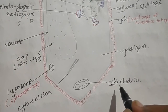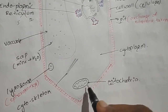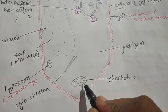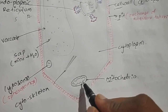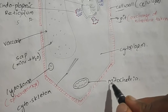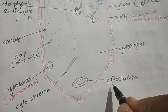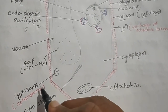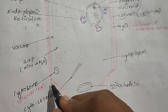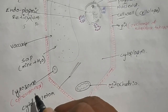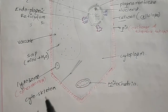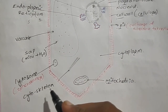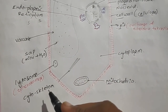The next organelle is the mitochondria. Mitochondria is a double membrane organelle, and the inner membrane folds inward to form structures known as cristae. Mitochondria is known as the powerhouse of the cell. In plant cells, the number of lysosomes is less and they are also known as sphaerosomes. Cytoskeleton is also present, giving framework and support to the cell.